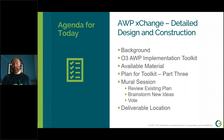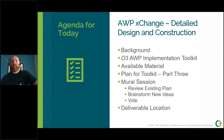Today's agenda covers: the background of AWP and what the AWP implementation toolkit is, a review of already published material, the plan for toolkit part three, an interactive Mural session where we'll review the existing plan and brainstorm new ideas with a vote, and finally a deliverable location showing where all published materials can be found. A Mural link was sent yesterday via email.